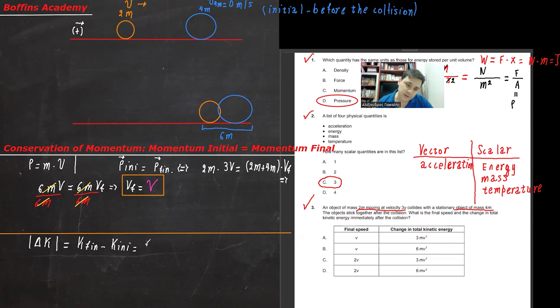So this is equal to k final minus k initial, which will give us one half k final. And here we have the object, the two objects. So this is basically, I forgot about the actual value. Sorry for that. It's 6m times V squared. And at the start, we have the object that is 2m times, it's 3v basically. It's 3v squared.